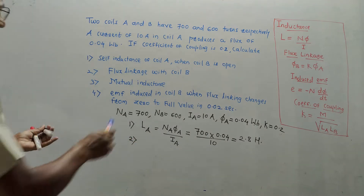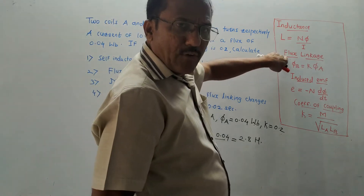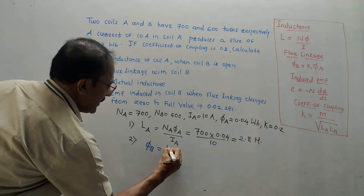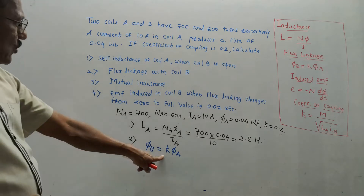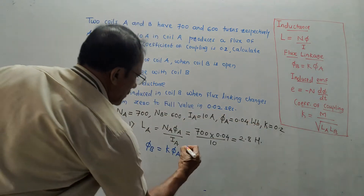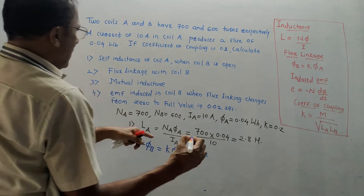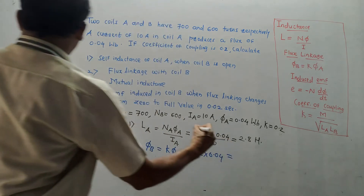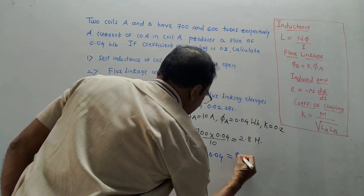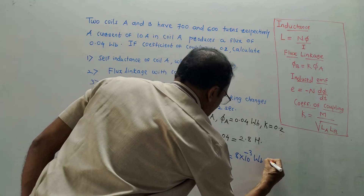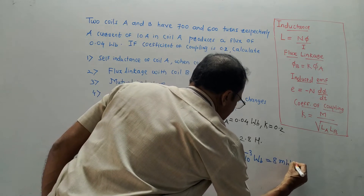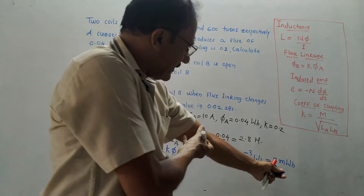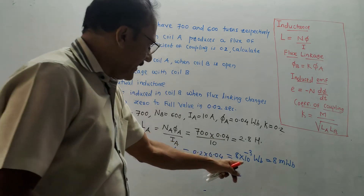Part 2: Flux linkage with coil B. Using the formula: phi_B = K × phi_A. K is the coefficient of coupling given as 0.2, and phi_A = 0.04 Wb. So phi_B = 0.2 × 0.04 = 8 × 10⁻³ Weber, which can also be written as 8 milliwebers.